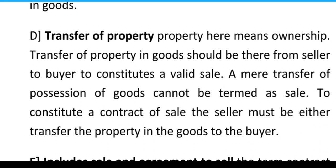The next ingredient is transfer of property. Property here means ownership. Transfer of property in goods should be there from seller to buyer. To constitute a valid sale, a mere transfer of possession of goods cannot be termed as a sale. To constitute a contract of sale, the seller must transfer the property in goods to the buyer — meaning ownership transfer is necessary. Just transferring possession is not a sale. The title, which is ownership, must transfer from seller to buyer.